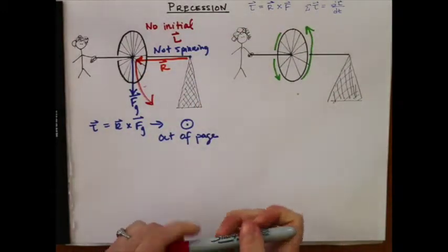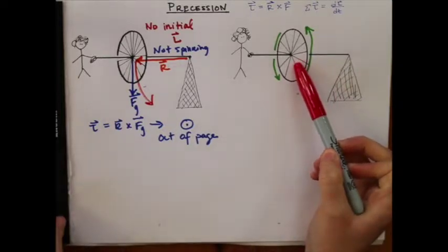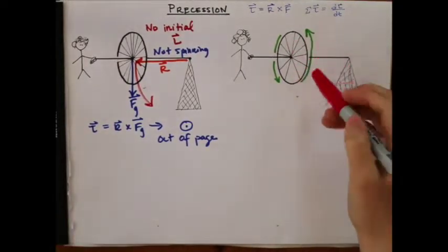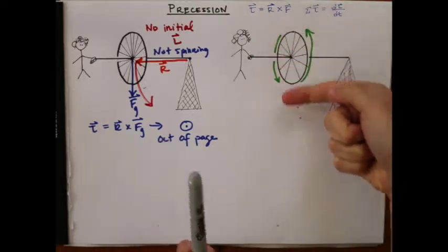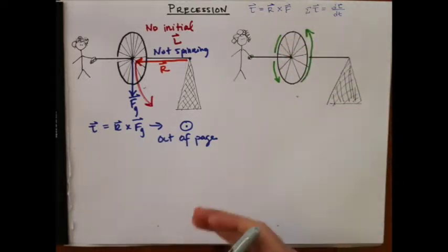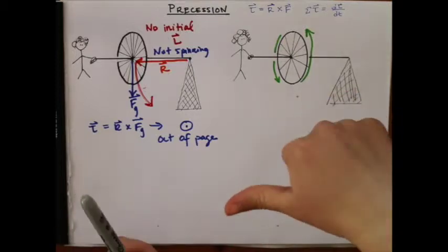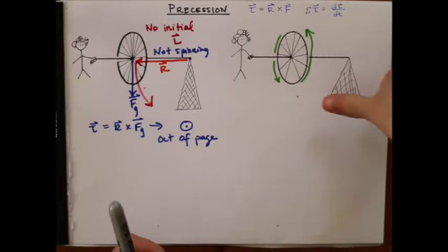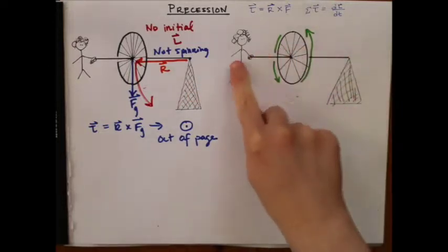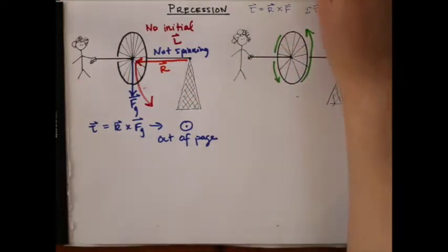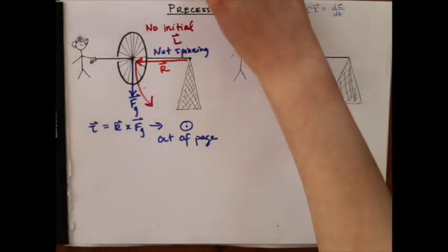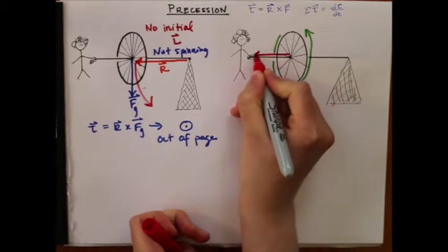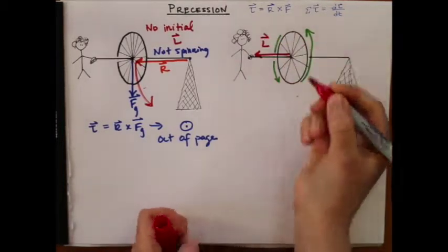So how about if we start with a wheel that's initially rotating? This wheel is rotating this way, and so if we want to figure out which way is the initial angular momentum pointing, we curl our fingers in the direction of rotation, and our thumb tells us that the angular momentum vector points this way, towards me. Let's draw it in. So that's the initial angular momentum.